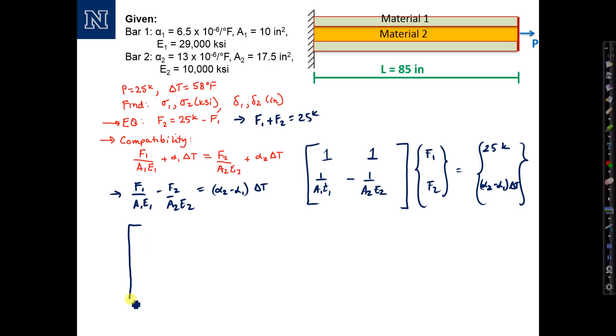substituting the numbers: 1, 1, 1 over A1—10 inches squared times E1, 29,000 ksi. Note these units are reduced to 1 over kips. The second term: negative 1 over 17.5 inches squared times 10,000 ksi, also 1 over kips,